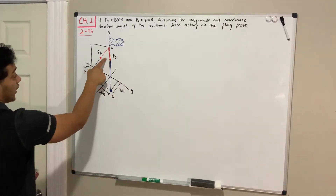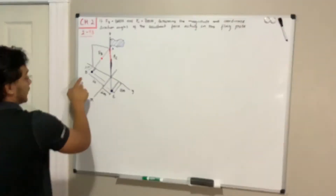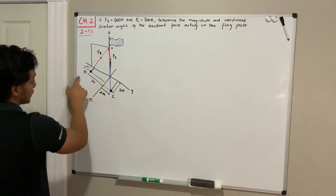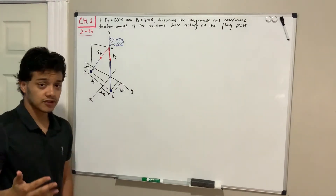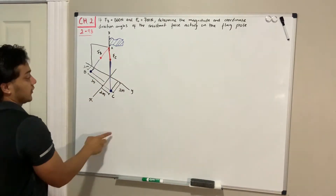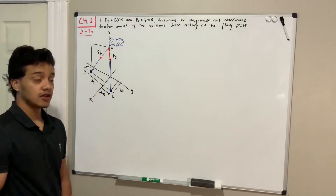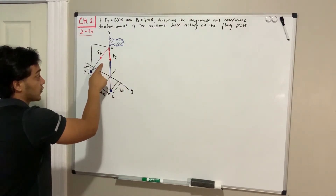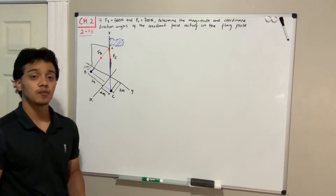We have this pole and at point A we have two forces — force B and force C — and these forces give us direction by pointing to where point B and point C are, telling us how much in the x, how much in the y, and z. To solve this problem we'll first define where point A, B, and C are located. From those points we find direction vectors, which tell us the direction of the forces. With those we find a unit vector, and with the unit vector we can decompose our forces.